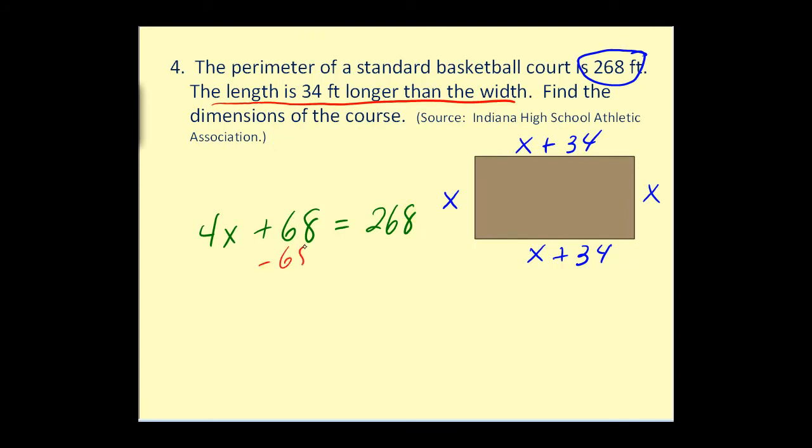Let's subtract 68 on both sides. This comes out to 200. We'll divide by four. Again the most challenging part is setting it up. We have x equals 50. Now again we need to make sure we answer the question. The question is find the dimensions of the court. The width is equal to x. Well x is 50. So the dimensions would be 50 feet.